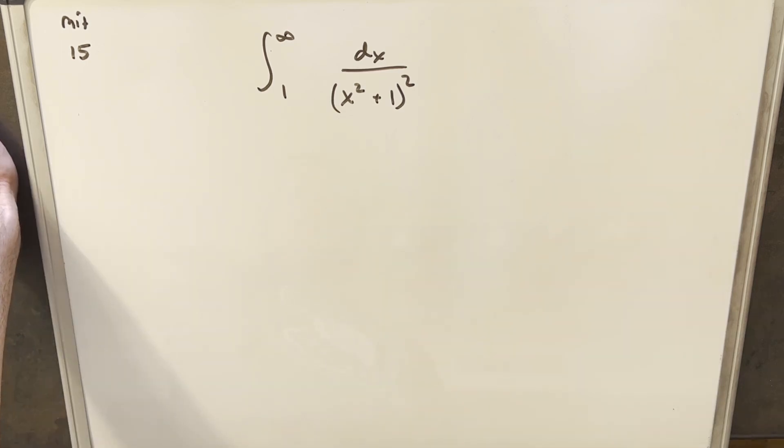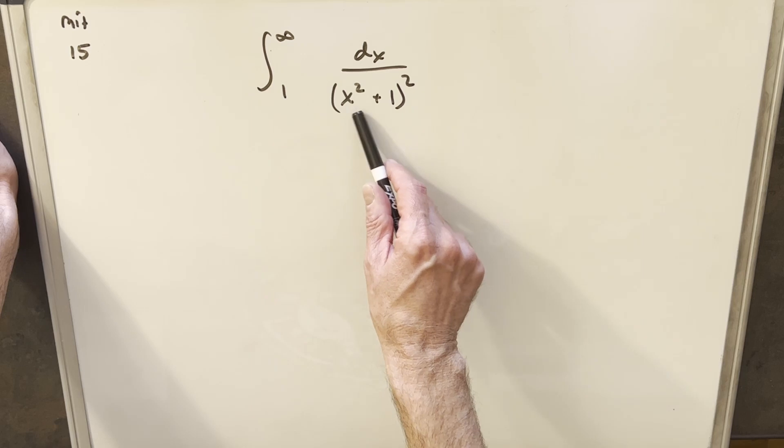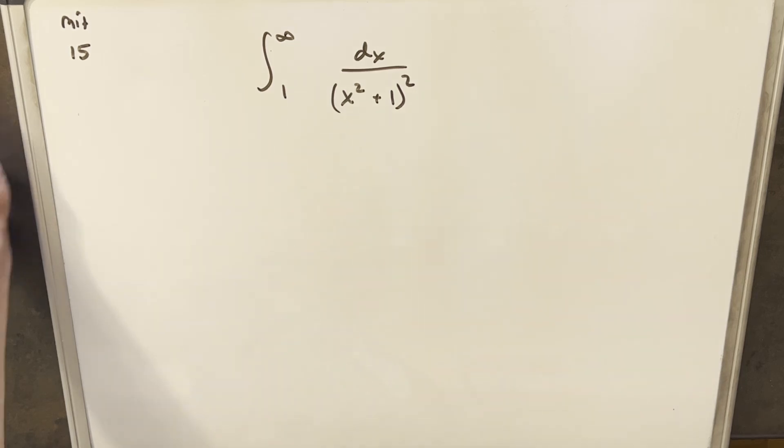You may notice this looks a lot like the integral for arctan, where we have x² + 1 in the denominator. It's just that it's squared, but we're still going to try the same technique and make a trig substitution.